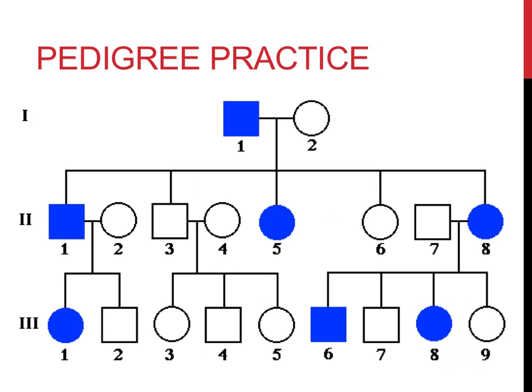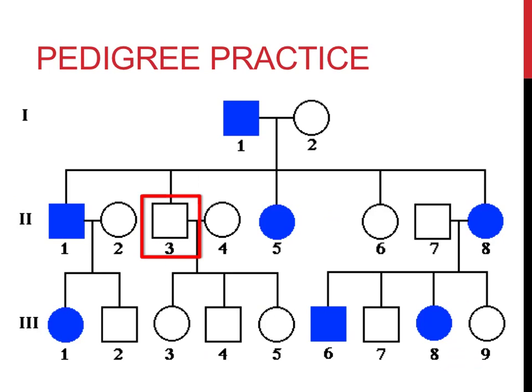What I'll do now is ask a number of questions and answer them to provide some pedigree practice. Where is individual Roman numeral II, 3 in this pedigree? First, look for the Roman numeral on the left. In this row, find the Arabic numeral 3. This is the individual that was being referred to.